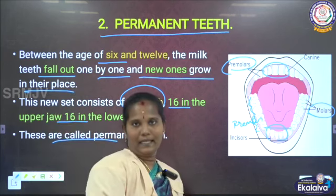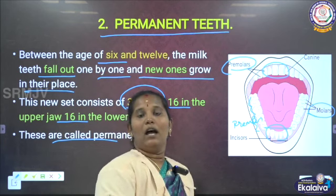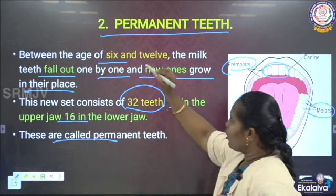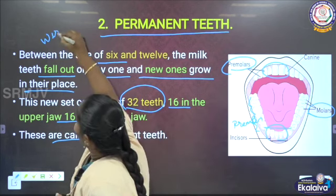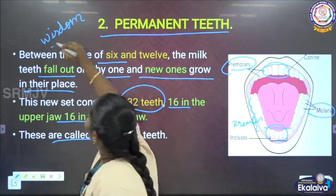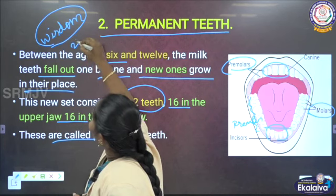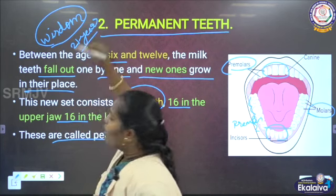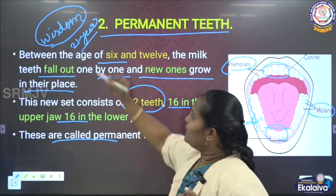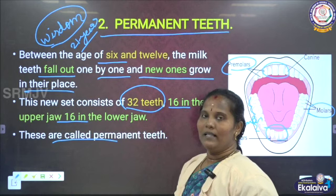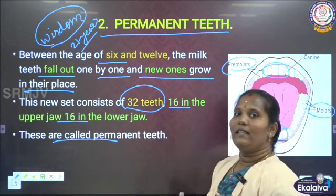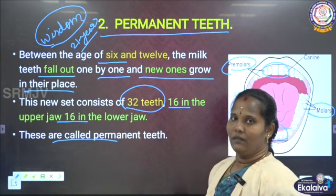Apart from milk teeth and permanent teeth, there is one more type - it is called wisdom teeth. This wisdom teeth starts to grow at the age of 21 years. When we get to 21 years, some extra teeth will appear - those are called wisdom teeth. So in total, human beings get two sets of teeth in their lifetime.